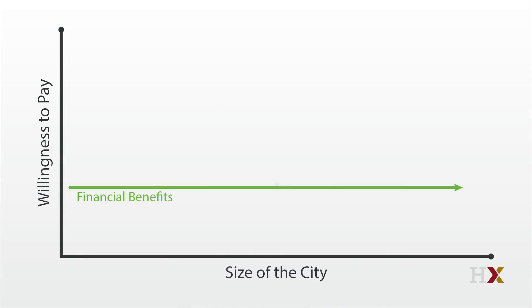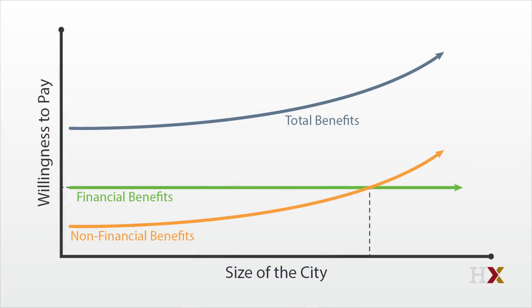We could model this by assuming that everyone is identical and all receive the same wage, which is fixed and independent of city size. The flow of amenities, however, might increase with city size, reflecting greater specialization and sharing of fixed costs. We would then get an upward sloping demand for city space, just like before.